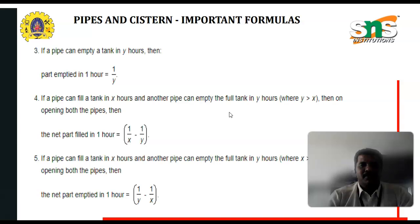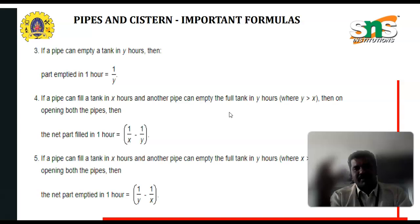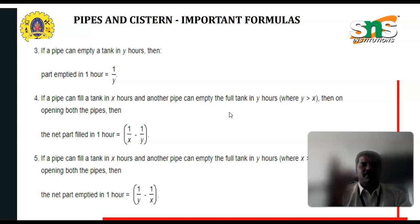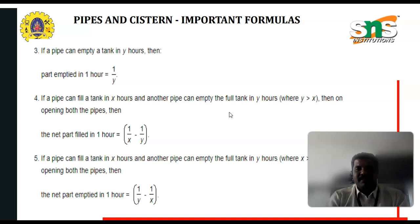If a pipe can fill a tank in x hours and another pipe can empty the filled tank in y hours, where y is greater than x, then on opening both pipes, the net part filled in 1 hour is equal to 1/x minus 1/y. In this formula, both the inlet and outlet pipes are opened.